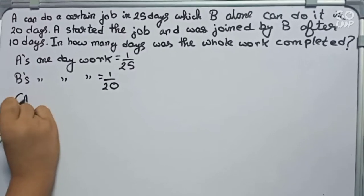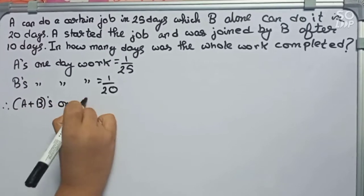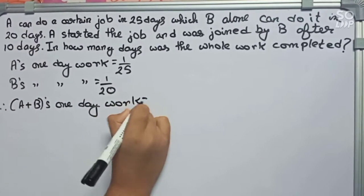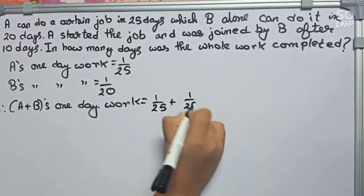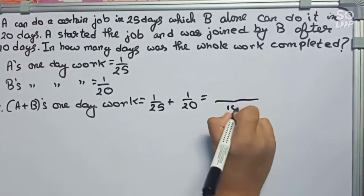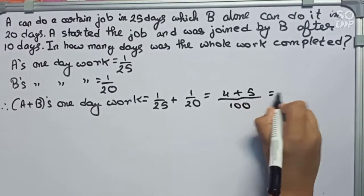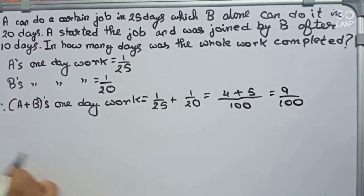Now therefore we will find A plus B's one day work. So it will become 1 by 25 plus 1 by 20. The LCM of 25 and 20 is 100, so we will take 100 as the base. It will become 4 plus 5, which equals 9 by 100. So this is the one day work of A plus B.